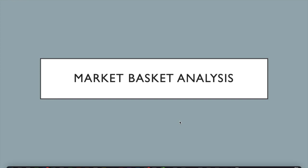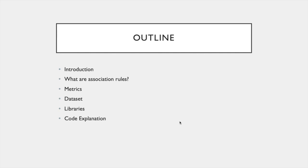In this video we are going to talk about our mini project: market basket analysis. The outline is as follows: first we'll understand what market basket analysis means, after that we'll understand association rules and the metrics associated with them, thereafter we'll understand the dataset and the libraries used in our code, and lastly we'll understand how the code works.